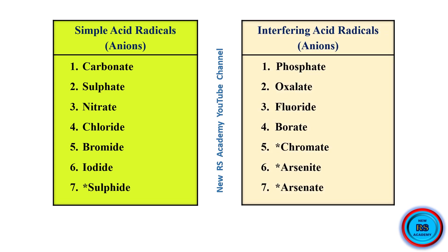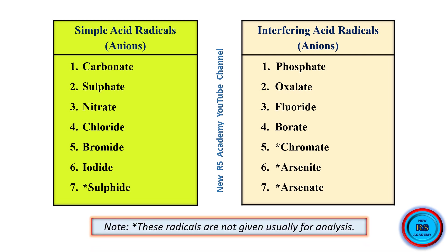Interfering acid radicals. What are the interfering acid radicals? Phosphate, oxalate, fluoride, borate, bromate, arsenate. These radicals are not given usually for analysis. They are marked with a star, which is mentioned in the practical classes.